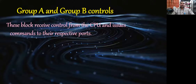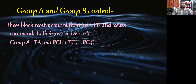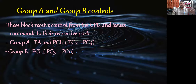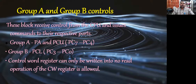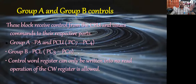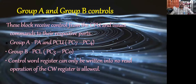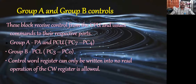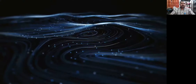Group A consists of port A and port C upper — PC7 to PC4 — giving 12 pins controlled by group A control logic. Group B consists of port B and port C lower bits PC3 to PC0. The control word register can only be written into; no read operation of the control word register is allowed. It specifies which port is selected as input and which as output.